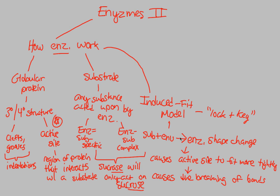There's that word again — emergence. So overall, we now understand how enzymes work. Enzymes are globular proteins, tertiary or quaternary in structure. They have an active site that binds to a substrate, creating an enzyme-substrate complex — for example, sucrase with sucrose. This process follows the induced fit model: the enzyme changes shape to create a tighter fit between the active site and the substrate, ultimately causing the breaking of bonds. In our next video, we'll look at why enzymes are very picky.